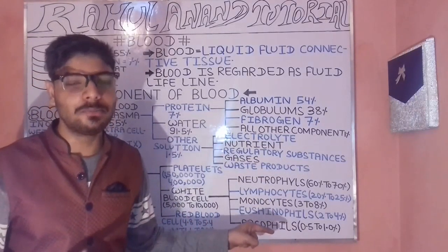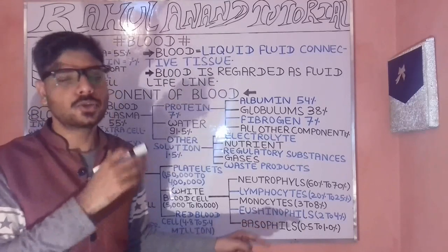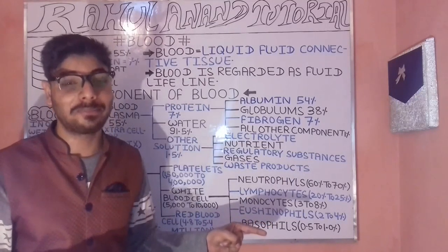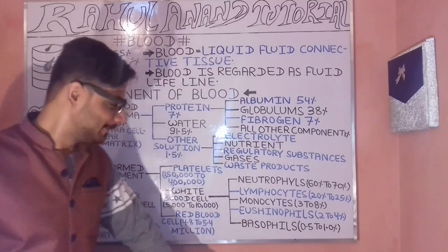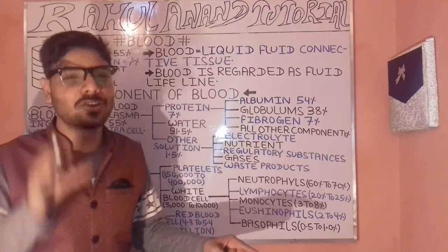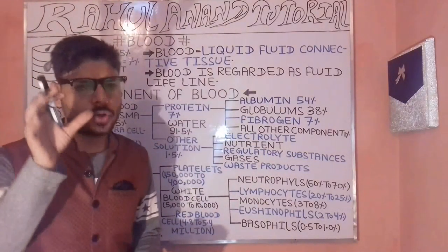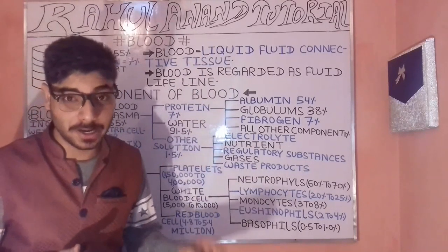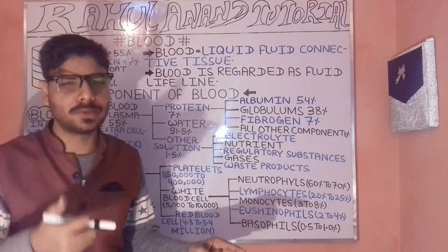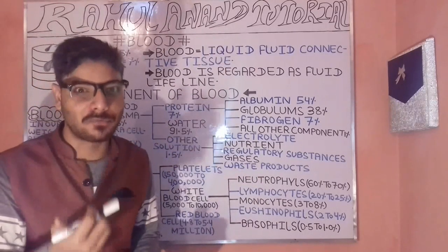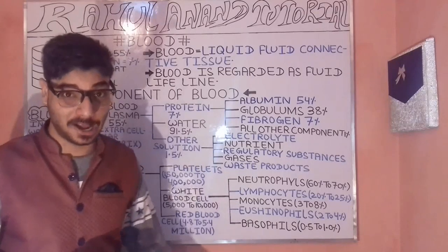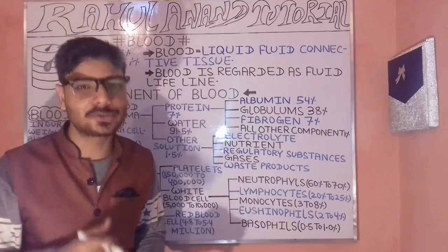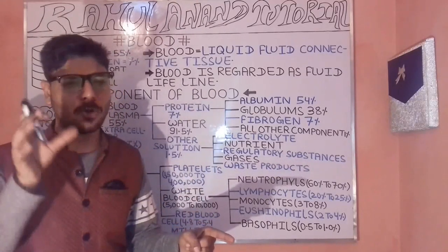Monocytes account for around 3 to 8 percent. Eosinophils account for 2 to 4 percent. Basophils account for 0.5 to 1 percent of white blood cells.